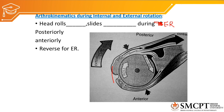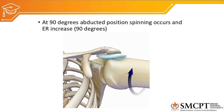Now, arthrokinematics during internal and external rotation: during external rotation, the head of the humerus is rolling posteriorly. Because the convex surface is moving on the concave surface, the sliding will be anteriorly. During external rotation the humeral head rolls posteriorly and slides anteriorly. The reverse happens for internal rotation — the humeral head rolls anteriorly and slides posteriorly. However, if the glenohumeral joint is abducted to 90 degrees and then internal and external rotation is performed, there will be only spinning of the humeral head on the glenoid fossa.